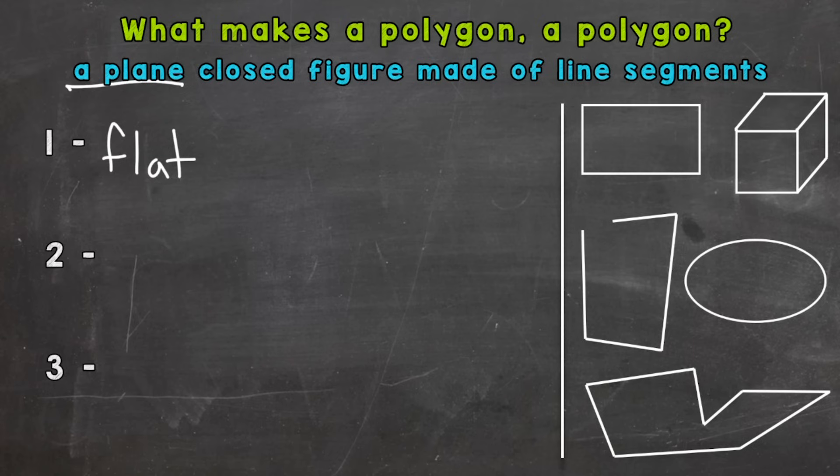Next, closed. A closed figure or shape, and that's exactly what it sounds like—it has to be closed. I will give you a counter example that's not a polygon. Let's say we almost have a rectangle here but we have this opening. That would not be a polygon because it's not closed.